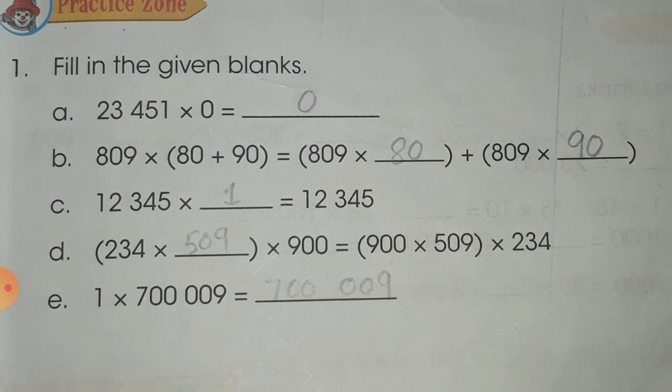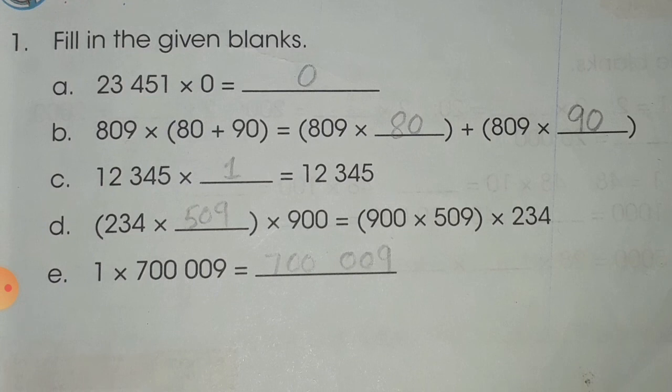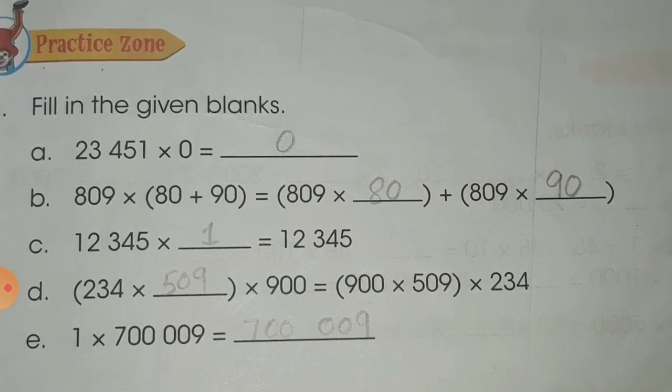So students: part A uses the zero property; part B uses the distributive property; part C uses the identity property or multiplicative property of 1; part D uses the associative property; and part E uses the multiplicative property of 1 or identity property of multiplication. Revise this concept and do the practice zone in your book with pencil, neatly. Good luck!